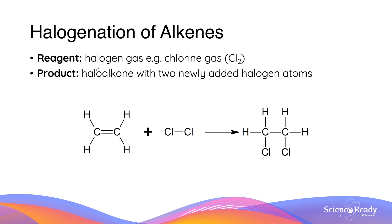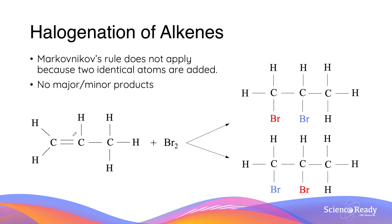The next addition reaction is halogenation. This is where an alkene reacts with halogen gas to produce a haloalkane with two halogen atoms added to the molecule. For example, the reaction between ethene and chlorine gas produces 1,2-dichloroethane. Keep in mind that in halogenation, Markovnikov's rule does not apply because two identical atoms — that is the halogen gas — are added. Therefore, the reaction does not produce major nor minor products.